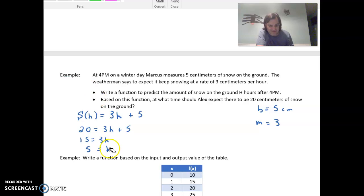So 5 hours after 4 PM. But it says at what time? So 4 plus the 5 equals 9 PM. There should be 20 centimeters of snow. Now that's just assuming it stays linear.